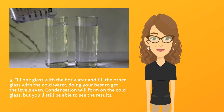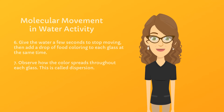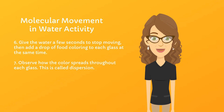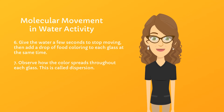Fill one glass with the hot water and fill the other glass with the cold water, doing your best to get the levels about even. Condensation will form on the cold glass, but you'll still be able to see the results. It's important to give the water a few seconds to stop moving to get good results. When the water is still, add a drop of food coloring to each glass at the same time and observe how the color spreads. This is called dispersion. We're using red food coloring for the hot water and blue for the cold.